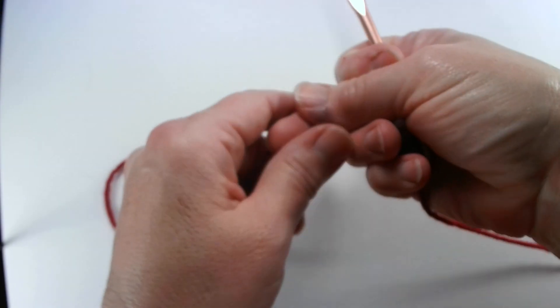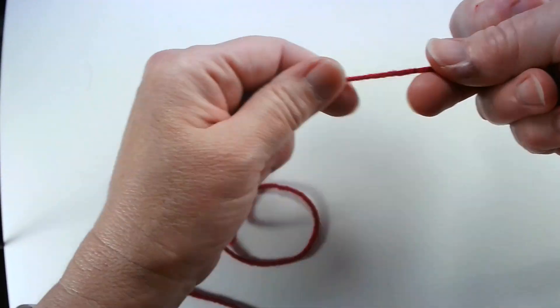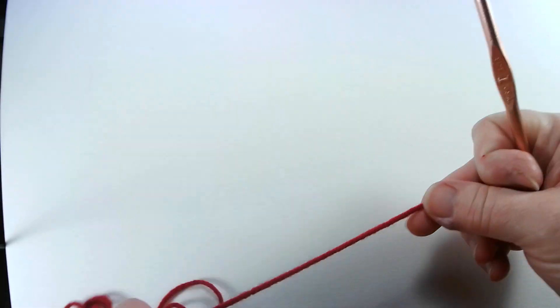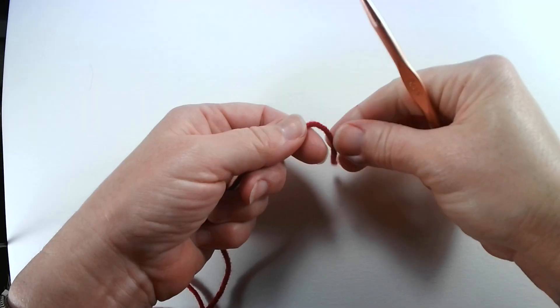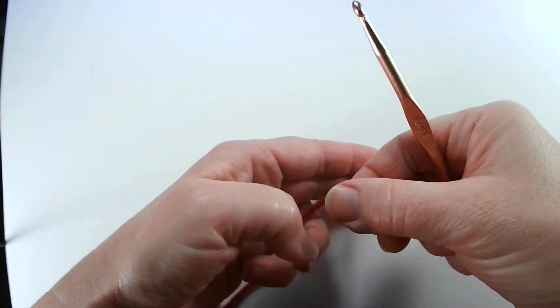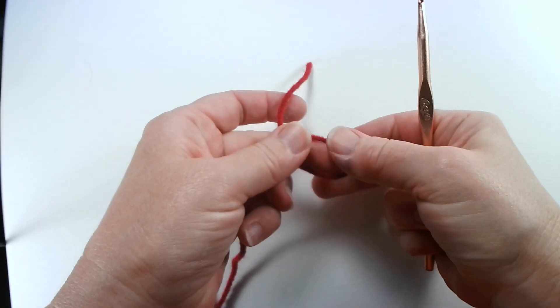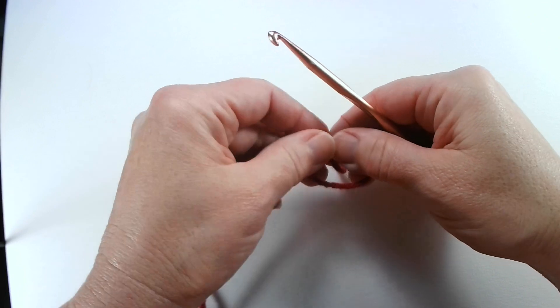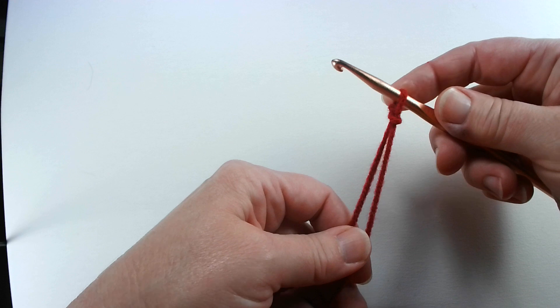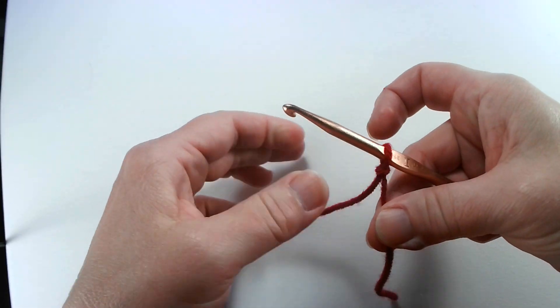Today I'm going to show you a basic chain stitch so we find the end of the yarn. In doing a chain stitch, you need to do a slip knot. You do a slip knot by twisting it around your fingers and pulling it up with your hook. So there you have your slip knot.